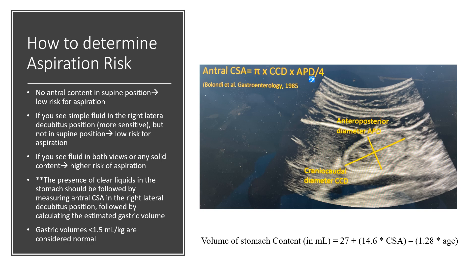Once you have the cross-sectional area, plug it into this equation to estimate gastric volume in milliliters: 27 + (14.6 × cross-sectional area) − (1.28 × patient's age). Gastric volumes less than 1.5 mL/kg are considered normal and low risk of aspiration in the perioperative setting.